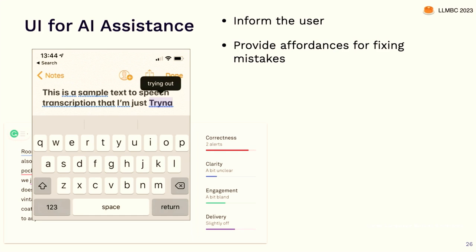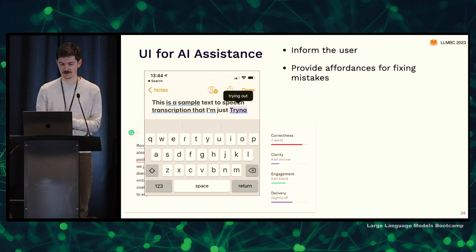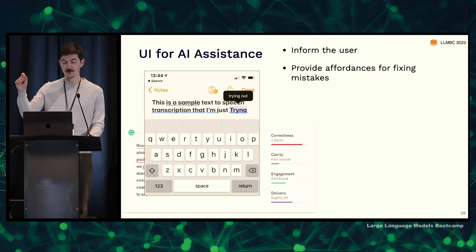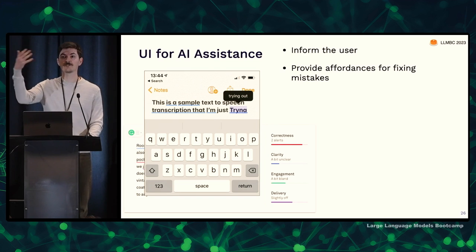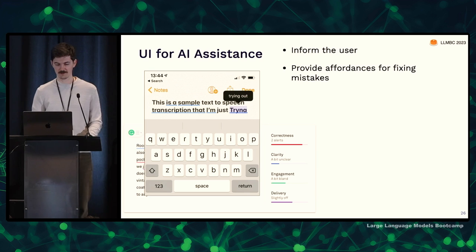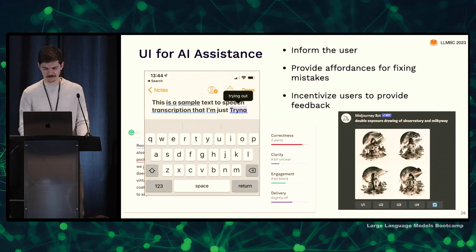It should also provide affordances for fixing mistakes. This is speech-to-text on a phone — it's not perfect and will transcribe things incorrectly, but it gives a really easy affordance: a highlight. If you click on that highlight, it suggests a change — it might say 'I think it was this word, but it could be this word.' One click and you can fix it.